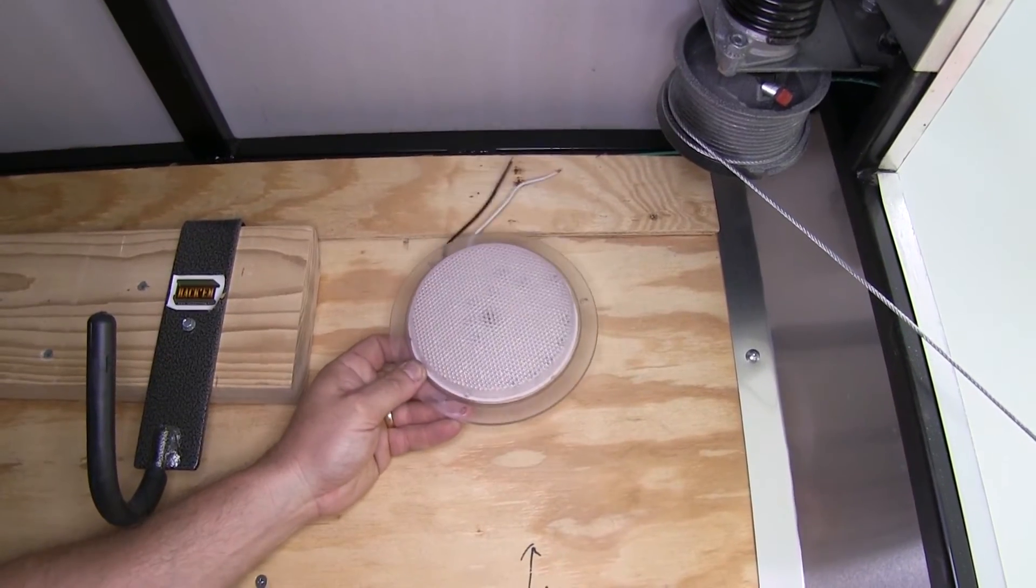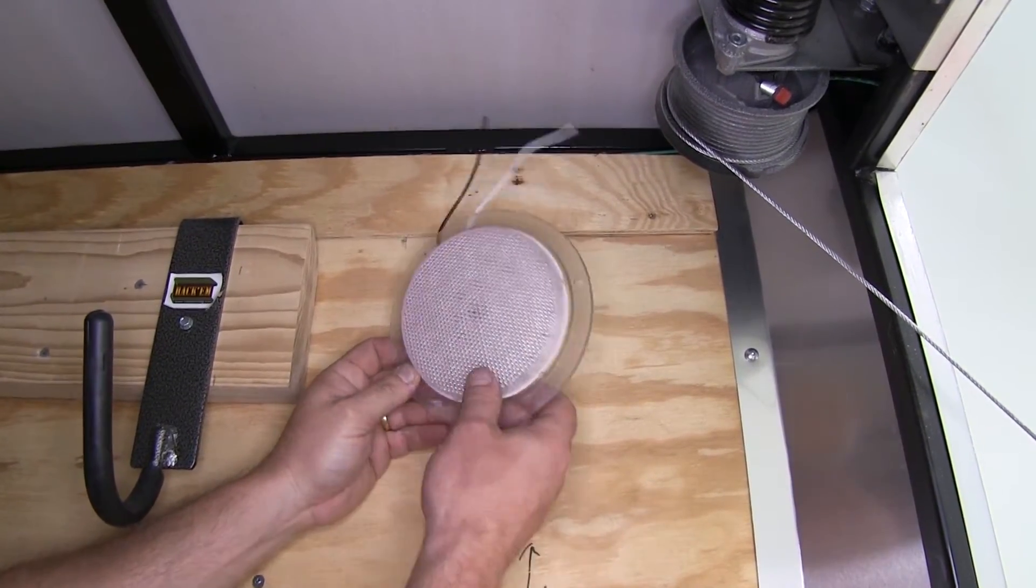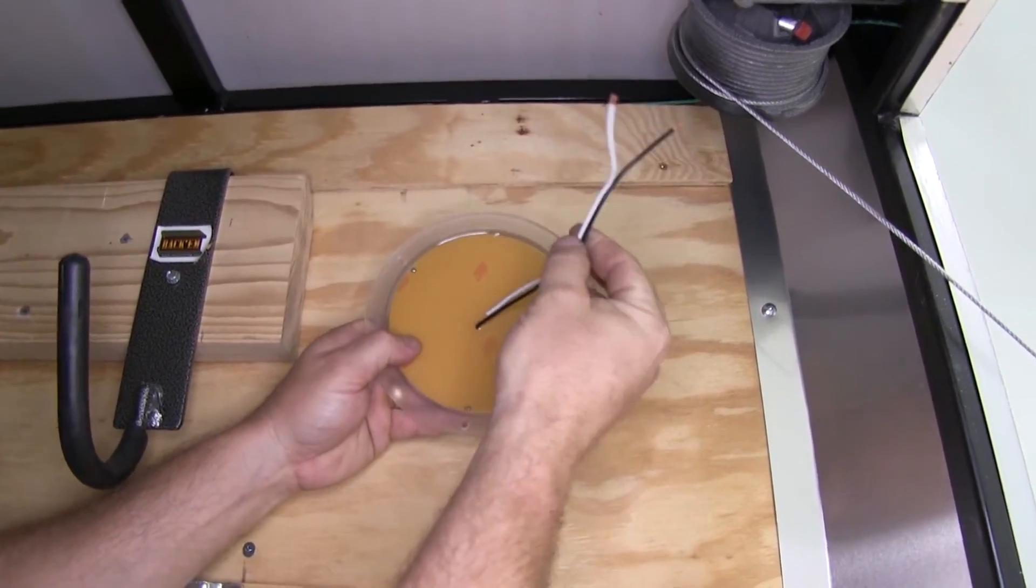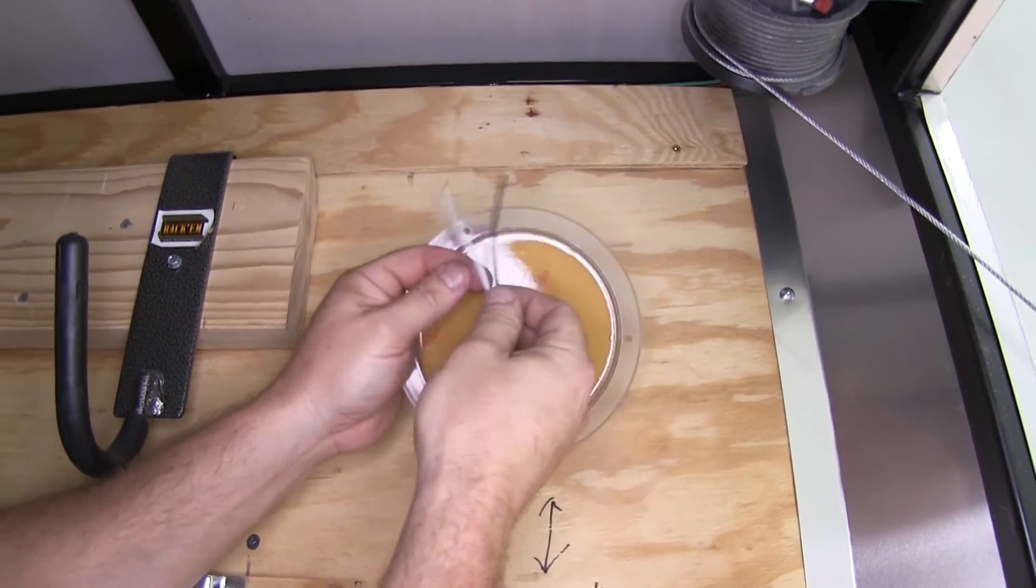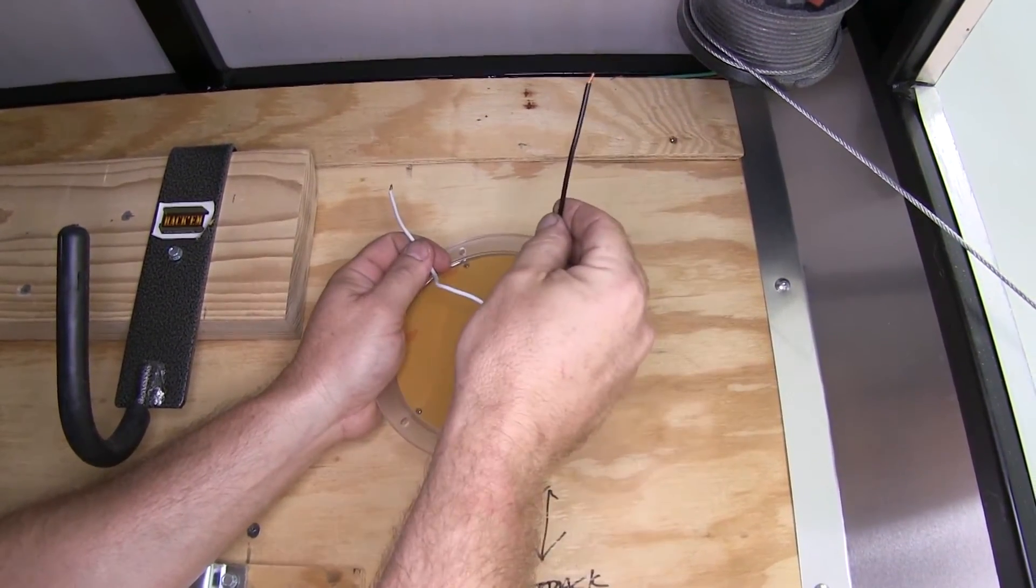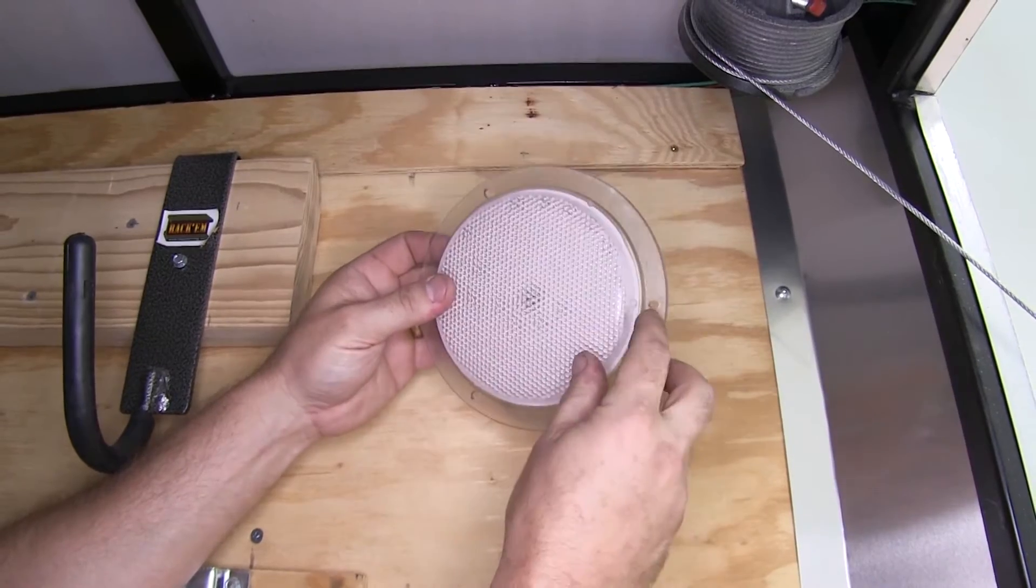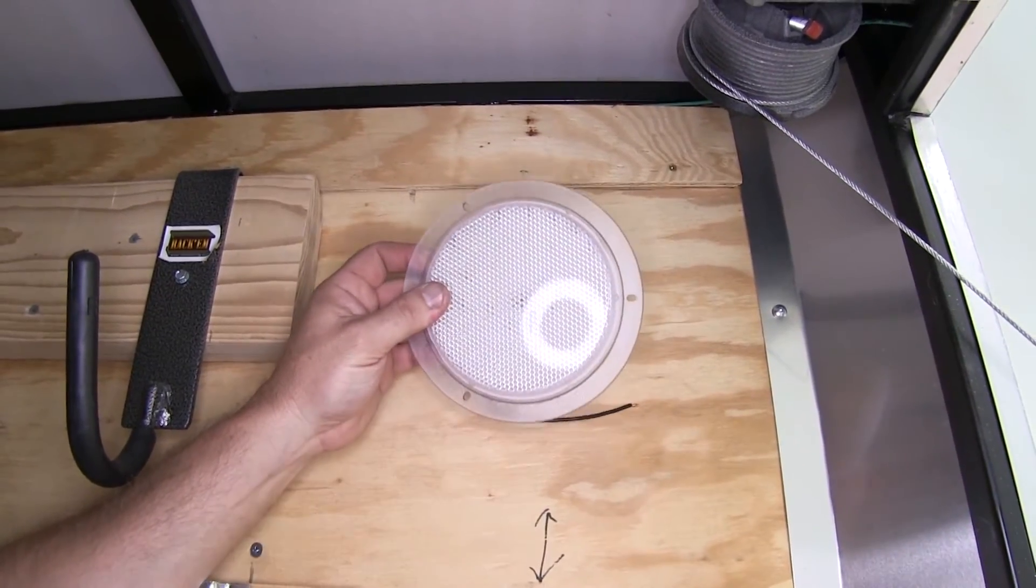Now here's what our Optronics LED light looks like. It's got two wires that come off the back - the white wire is the ground, the black wire is the power wire. It has three little holes drilled already in the light for mounting it.